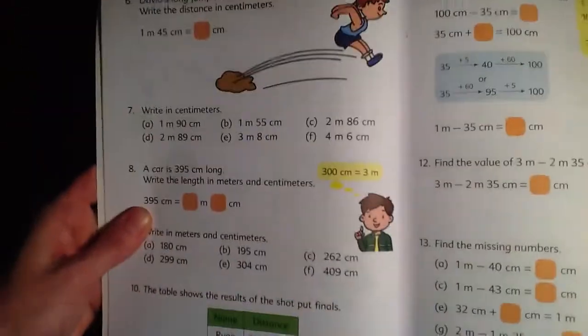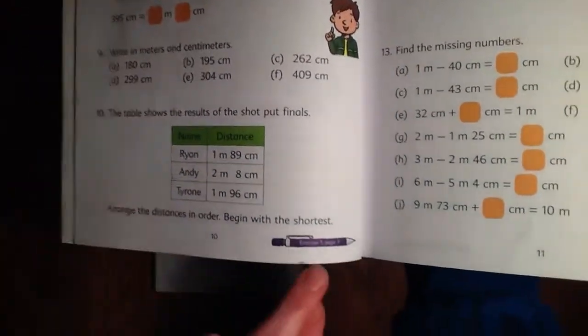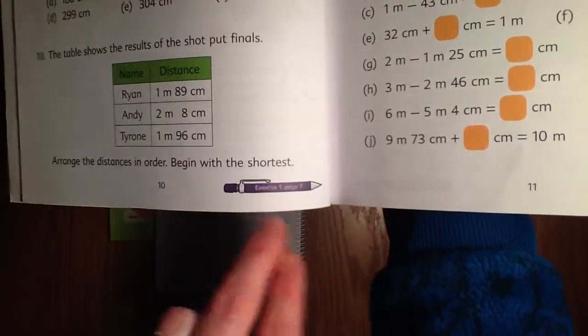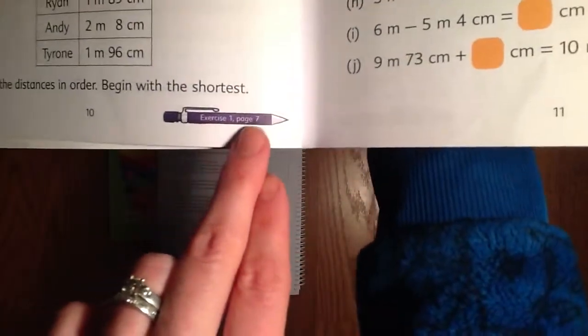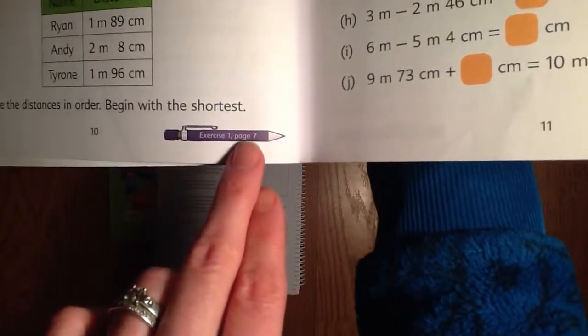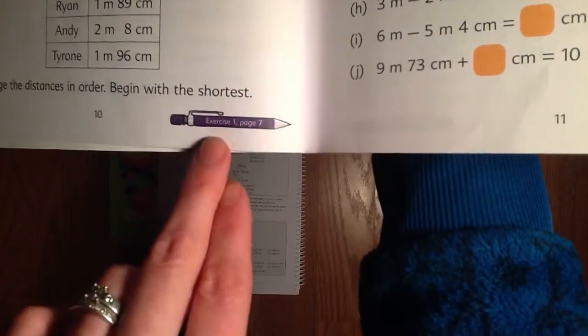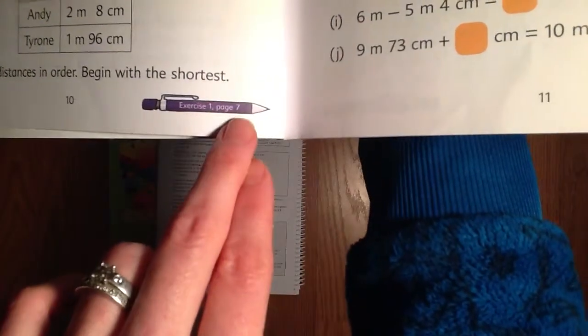You'll notice too that at the end of each segment here there's a little pen and this is kind of your stopping point, a cue, to stop here and now go to exercise 1 page 7.